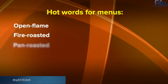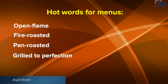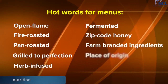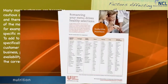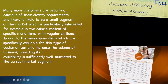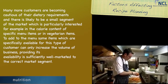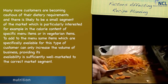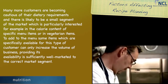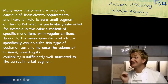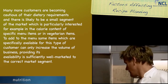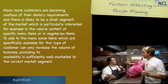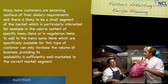Here are some additional words that are hot on menus: open flame, fire roasted, pan roasted, grilled to perfection, urban fused, fermented, zip code honey, farm branded ingredients, place of origin, local and seasonal. Descriptive words around preparation and where the products are sourced are very effective. Many more customers are being cautious of their dietary requirements, and there is likely to be a small segment of the market interested in calorie content or vegetarian items. Adding such items to the menu can only increase the volume of business, providing availability is sufficiently well marketed.